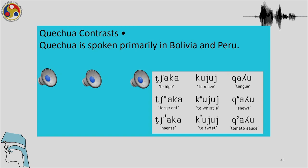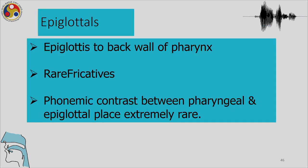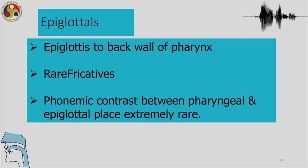In Quechua, spoken in South America including Bolivia and Peru, we have examples of palatal sounds. Epiglottals are produced by putting the epiglottal against the back of the pharyngeal region. Epiglottal fricatives are rare, and the phonemic contrast between pharyngeal and epiglottal place is also extremely rare.